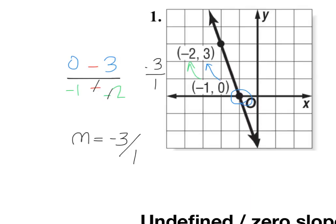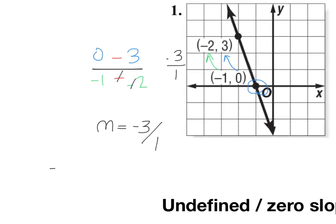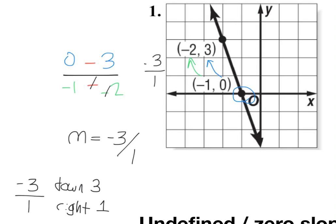And so what that means from a rise over run perspective, is we're going to go down 3 to the right 1. And if we take this path, we see that that does in fact match. If I go down 1, 2, 3 to the right 1, I land back on my line. And we could do that as many times as we wanted. Down 1, 2, 3 to the right 1. And we land back on our line.